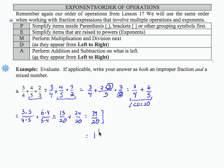If I divide 20 into 39, that goes one time with the remainder of 19 over the denominator of 20. And that is my mixed number final result.